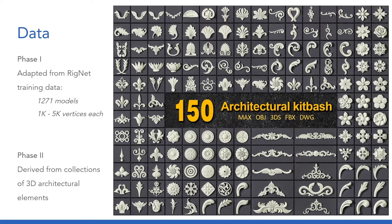We are retraining Rignet in two distinct phases. First, using a modified version of the original Rignet training data. Our target graphs in each training pair are simply scaled versions of the input graph itself — we scaled each input along the y-axis, essentially making the models taller. So instead of outputting animation skeletons, we will just output a taller version of the input. Second, we will train on training pairs created from collections of ornamental architectural elements, which are created and sold for use in architectural visualization.